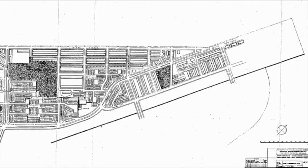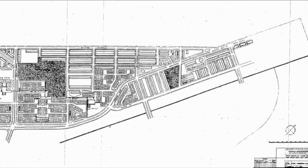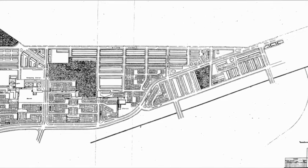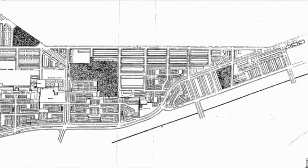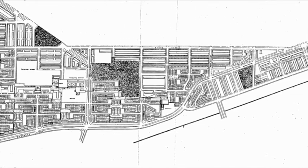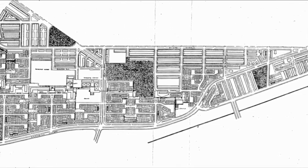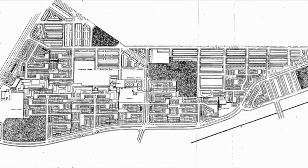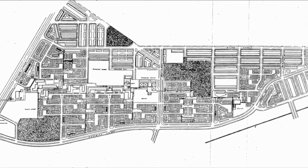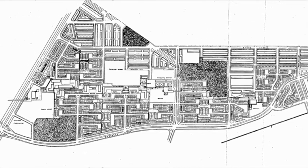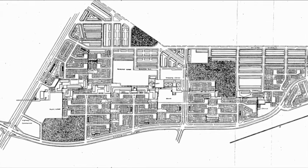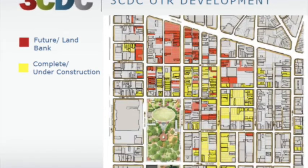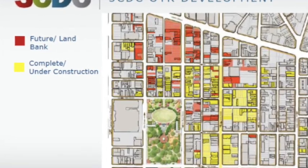Throughout the previous sections, some common themes have been highlighted along with some differences between these two redevelopment projects. A closer look at the way each project was planned and carried out provides a window into understanding broader historical shifts in the objectives, legal basis, and public oversight of urban redevelopment agencies. The agencies that led the redevelopment of Eastwick and Over the Rhine are quite different from one another. In Eastwick, Pennsylvania, the agency that led the redevelopment was a public sector group called the Philadelphia Redevelopment Authority. In Over the Rhine, almost all of the redevelopment projects were developed through 3CDC, a private non-profit corporation founded in 2003.